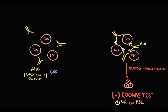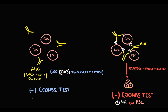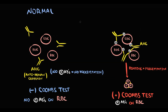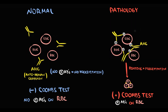If antibodies are not bound to red blood cells, then there will be no precipitation. Absence of agglutination tells us that there are no antibodies on red blood cells, and thereby no autoimmune reaction, which is completely normal. But if agglutination occurs, it tells us about an autoimmune reaction against red blood cells, which is definitely pathology.